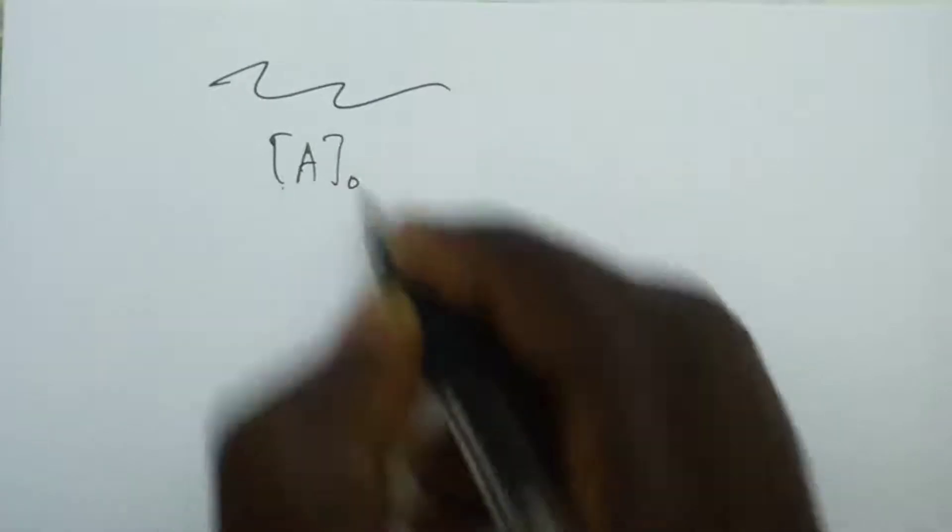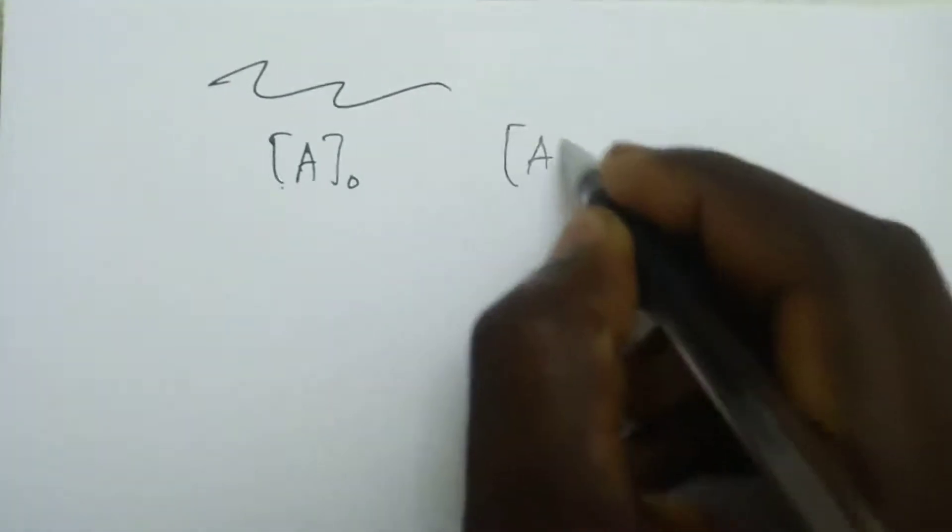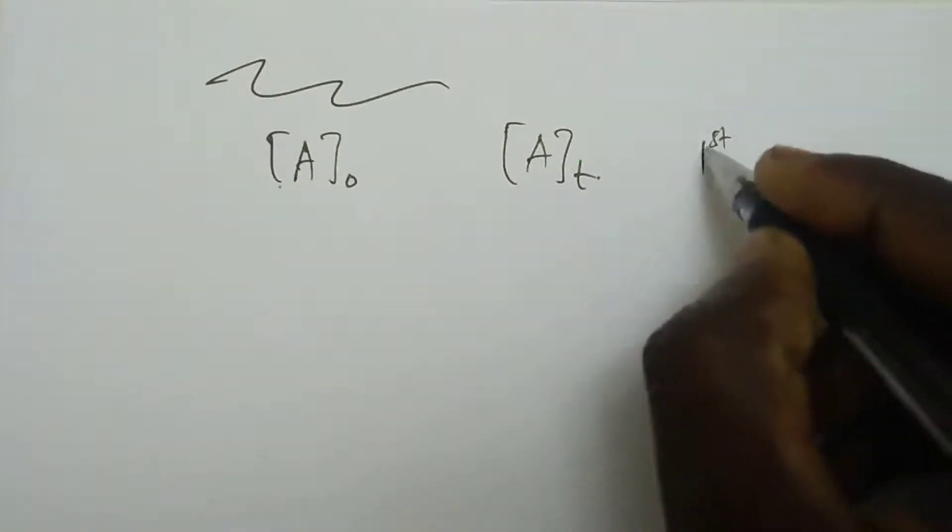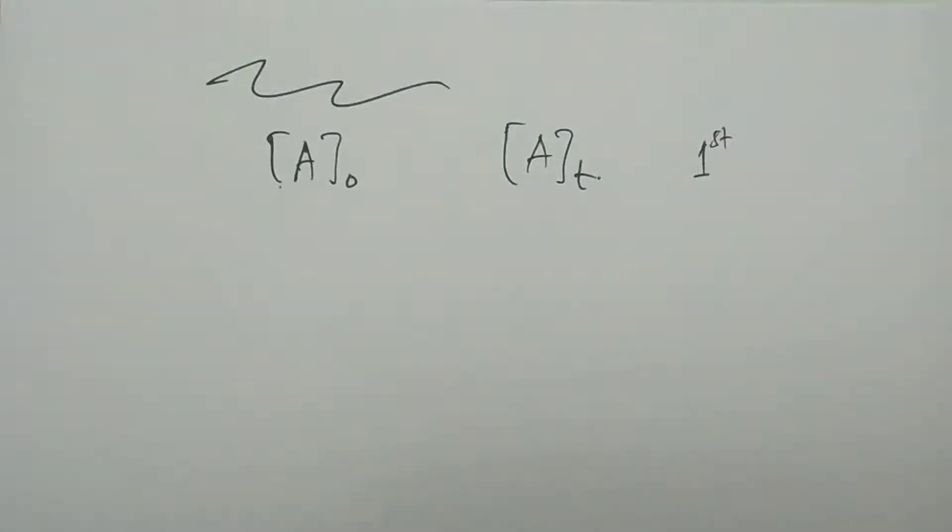One area of confusion among students is in the integrated rate equation. Before we discuss the integrated equation for zero order, first order, or other orders, let me explain when you are talking of A₀ and when you are talking of AT.